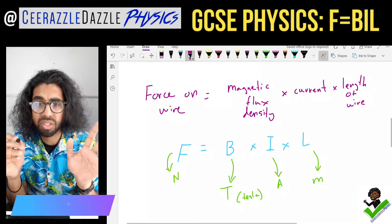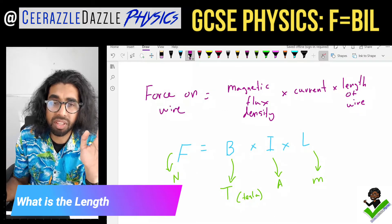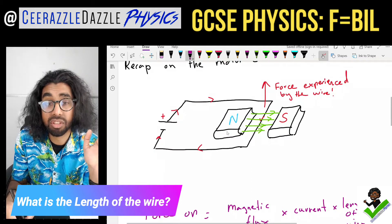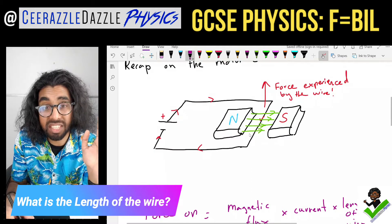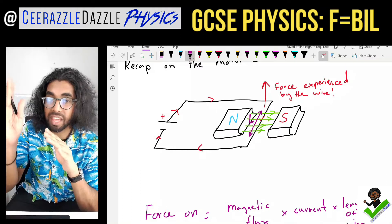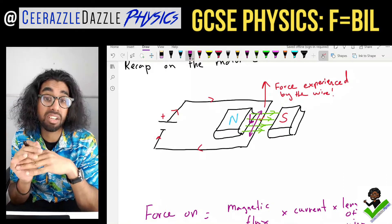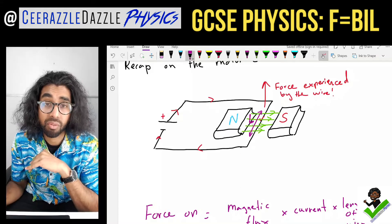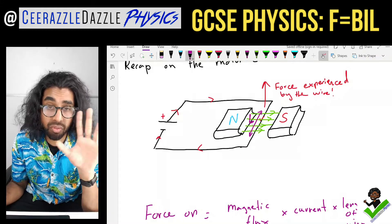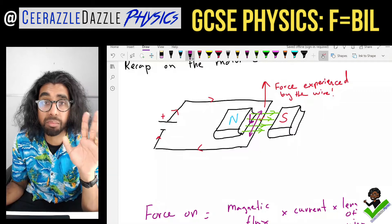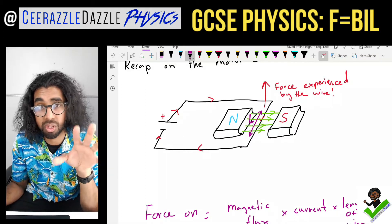The length of the wire — if you look at the diagram — is the length of wire that is perpendicular to the field. That is the length L. Now let's do a couple of questions to test our understanding and make sure we know how to use the equation.